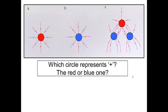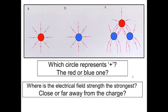Which circle represents the positive, the red or the blue one? Where is the electrical field strength the strongest, close or far away from the charge? So remember that the positive, the electric field lines point away from the positive towards the negative. So the red would be the positive and the blue would be the negative. And the field strength would be highest, closest to the object.